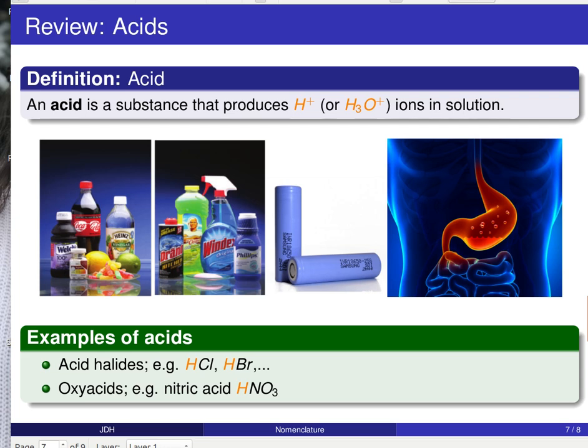And then our third class of compounds are acids. And remember that our working definition of acid is a substance that produces H-plus ions in solution. So there's a whole bunch of these guys that show up in our everyday lives, foods, power sources, batteries. Our digestive system is facilitated by the presence of a strong acid solution.